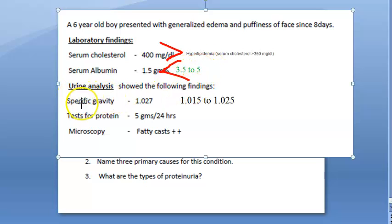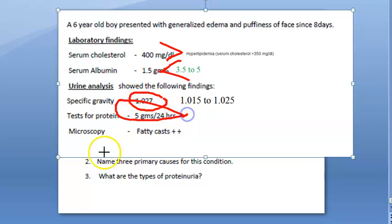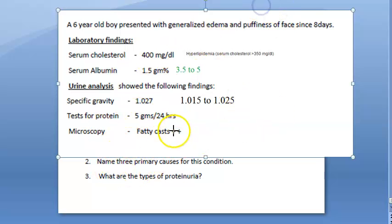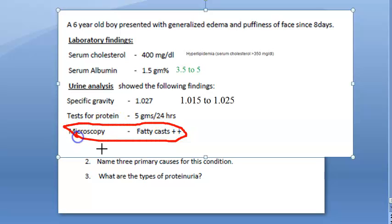Coming to urine, specific gravity is slightly more because the proteins are present in the urine. Protein presence is confirmed in the urine, and there are fatty casts in the microscopy.